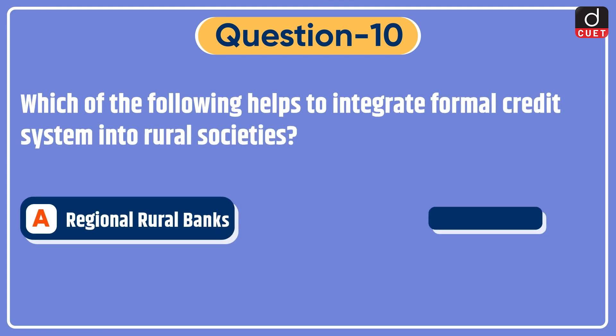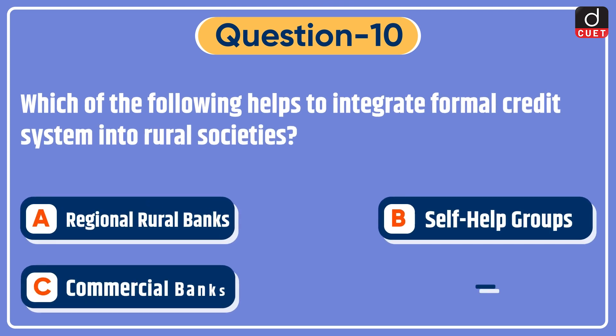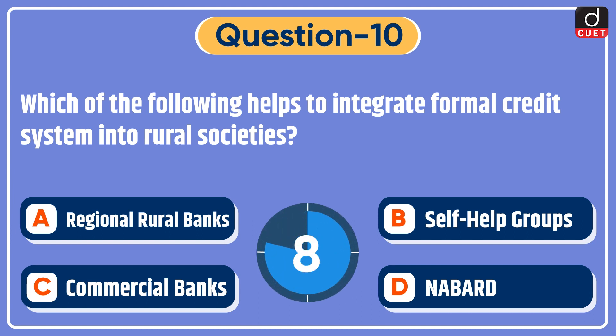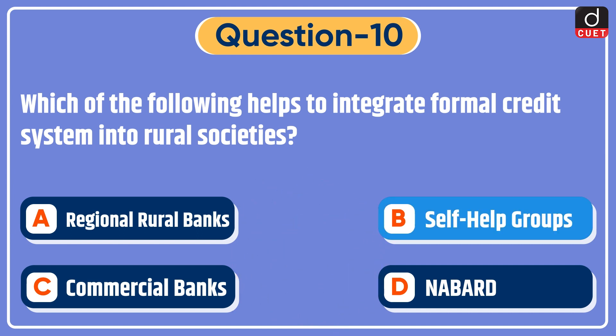Last question: which of the following helps to integrate the formal credit system into rural societies? Options: regional rural banks, self-help groups, commercial banks, or NABARD? The correct answer is option B — self-help groups.